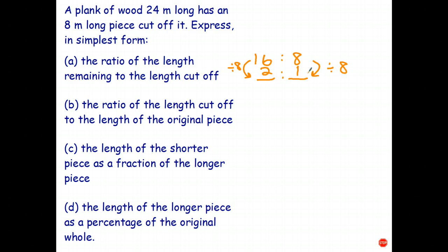The ratio of the length cut off to, sorry, to the length of the original piece, well, the length cut off was eight. The original piece was 24, and to simplify that, we have to divide by eight, divide by eight, and that gives us one is to three.